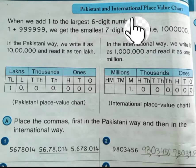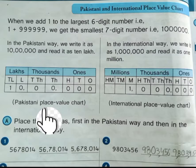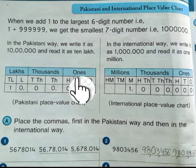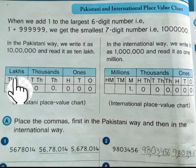Look at the first chart. It is the Pakistani place value chart. We learn to write 7 digits in it. It is divided into 3 periods: 1s, 1000s, and 100s.